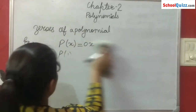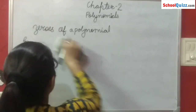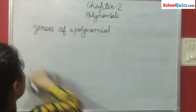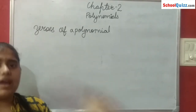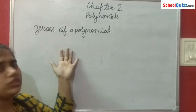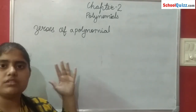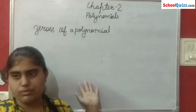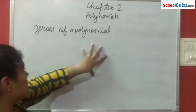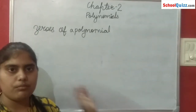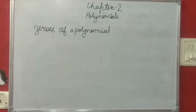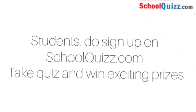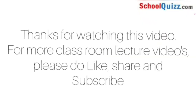I hope you all got a clear idea about what are the zeros of a polynomial — that value of x at which the equation becomes 0. These are the zeros of a polynomial. Thank you, students.